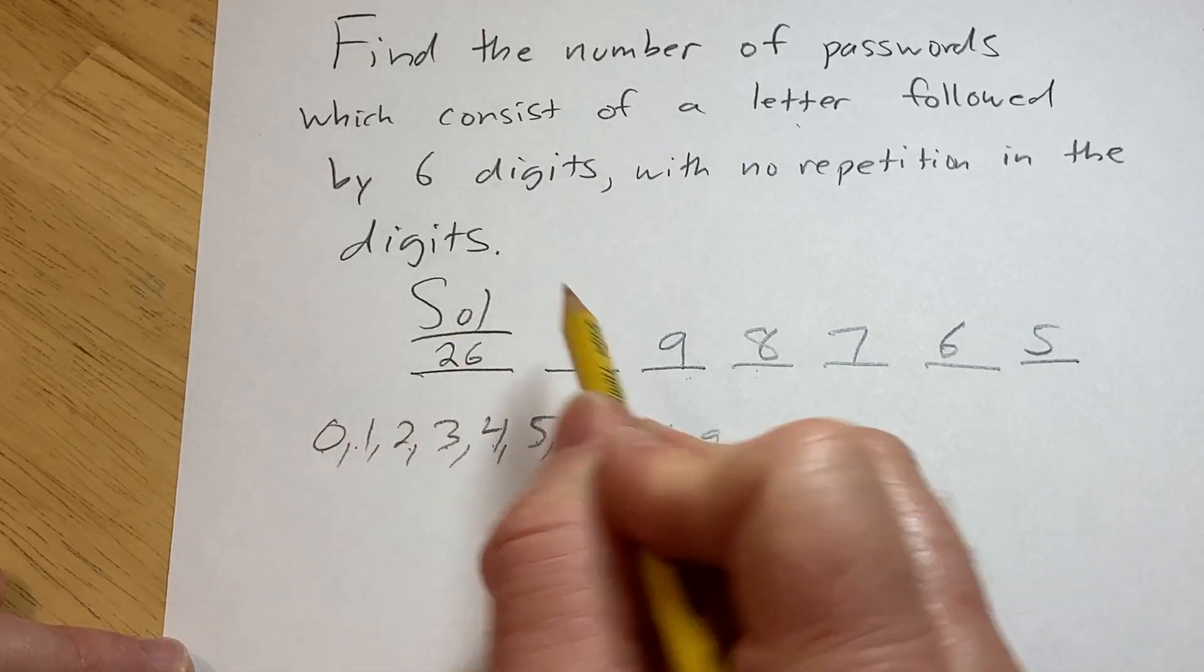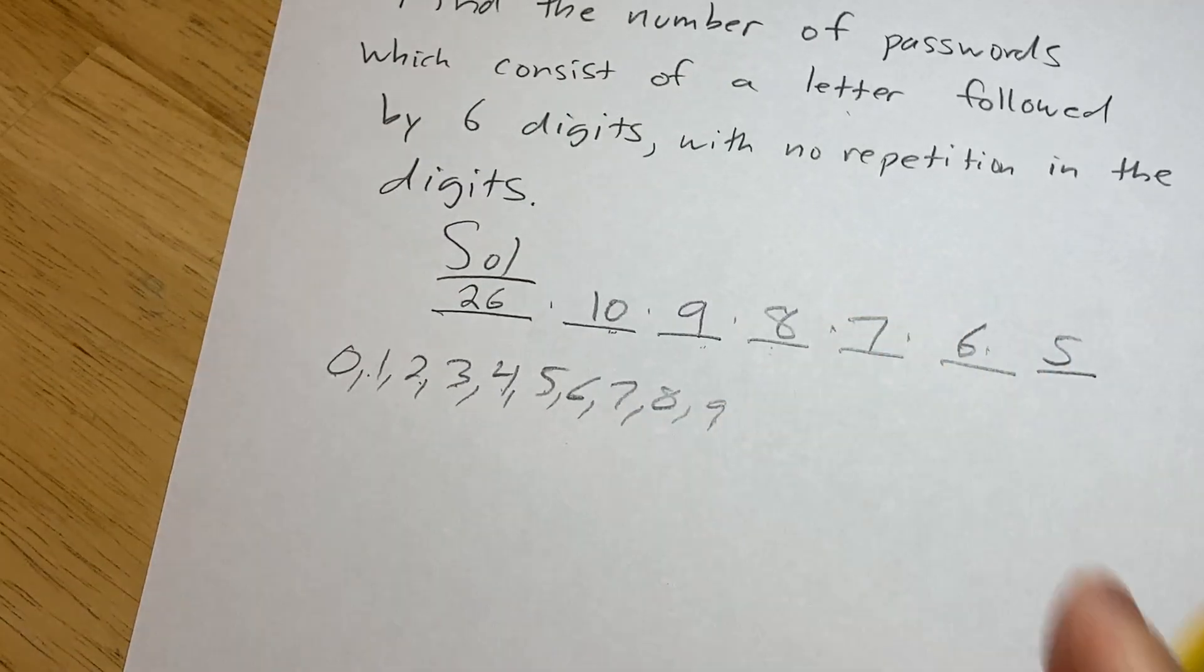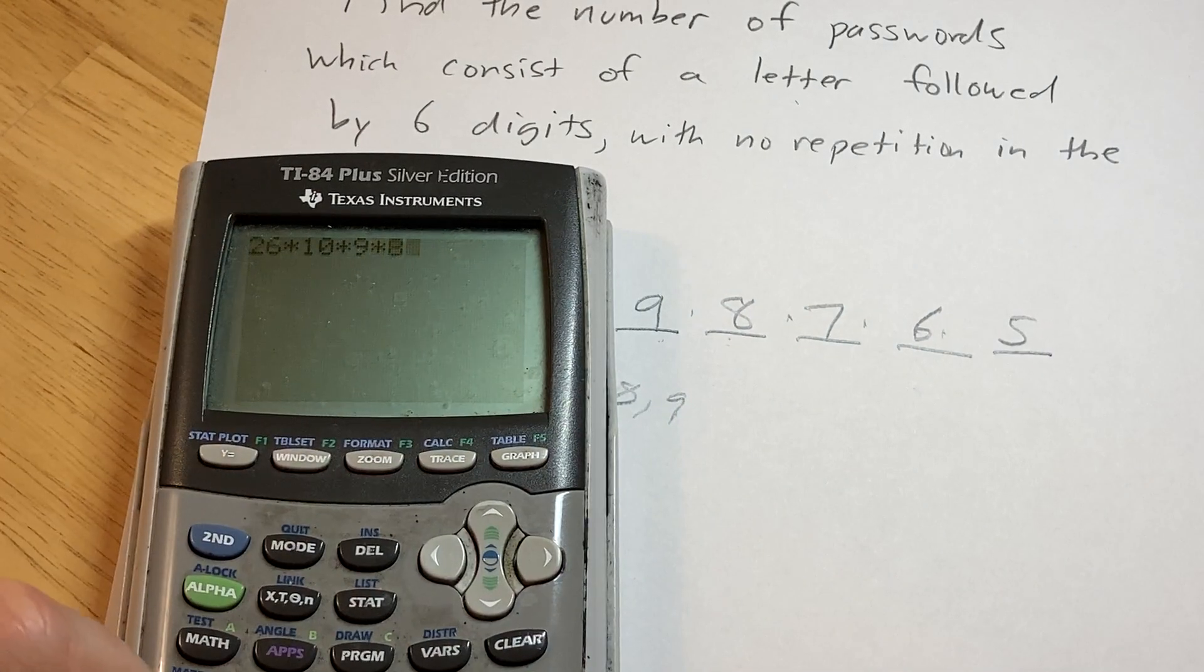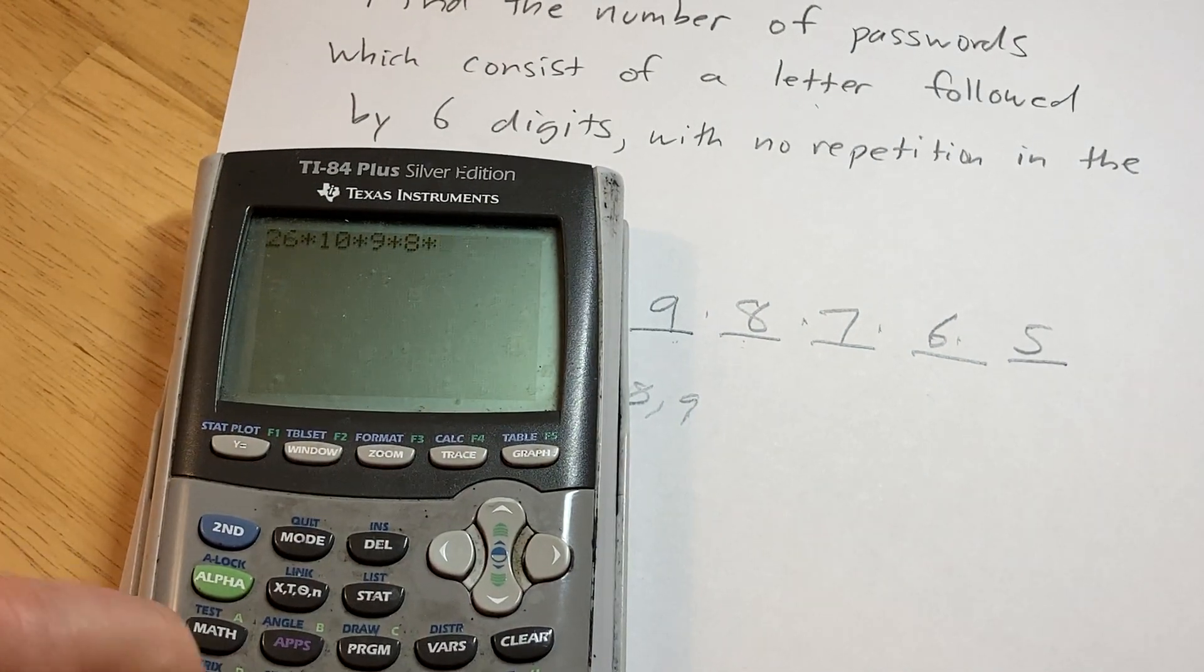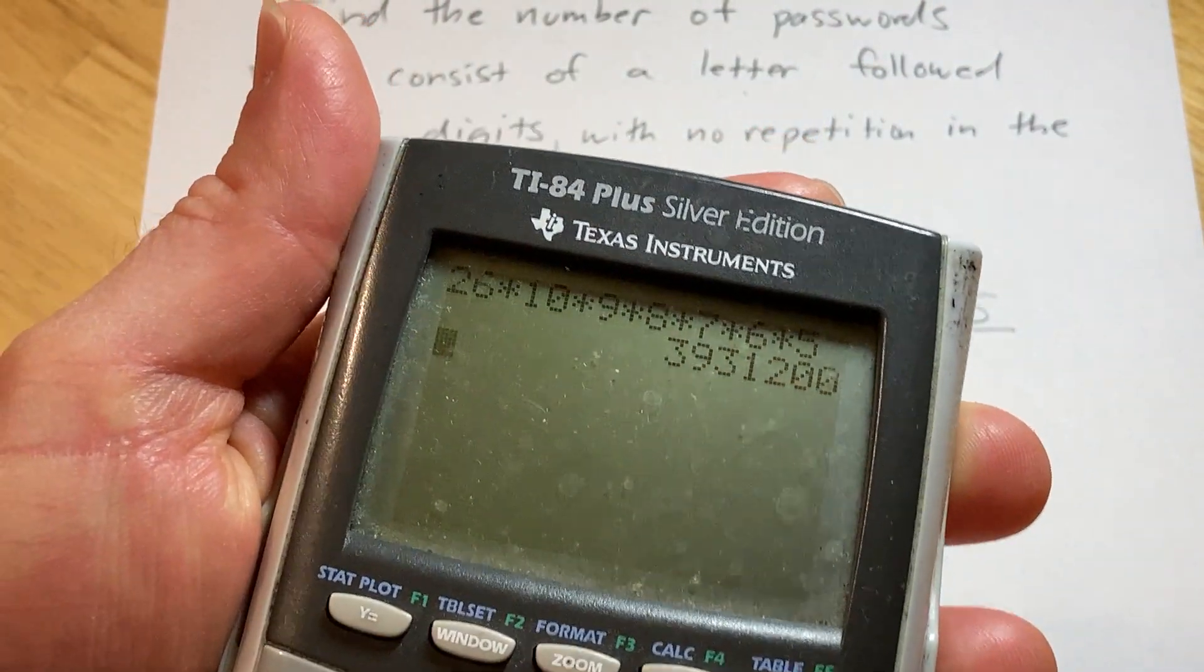The number of possible passwords is the product of all of these numbers, which I have not done yet. So I'm going to just do a quick computation. 26 times 10 times 9 times 8 times 7 times 6 times 5.